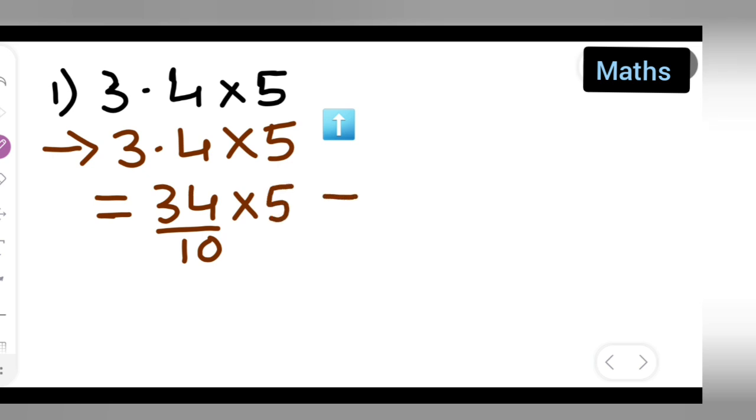Then what you can do is write down 34 multiplied by 5 upon 10. So you can cancel this. 5 ones are 5, 5 twos are 10. So you will get 34 upon 2.